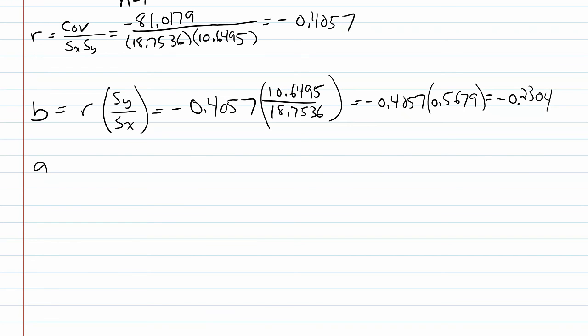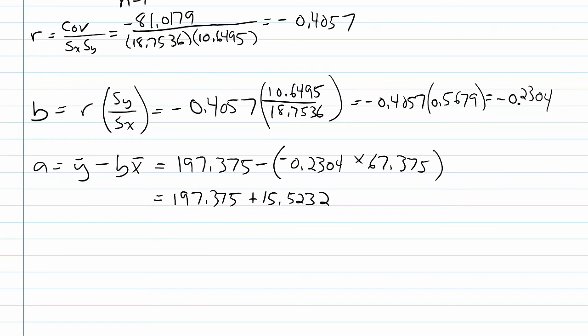To get the intercept, what I need is y bar minus b times x bar. That's going to equal 197.375 minus negative 0.2304 times 67.375. That's going to equal 197.375 plus 15.5232, and the final result is 212.8982.